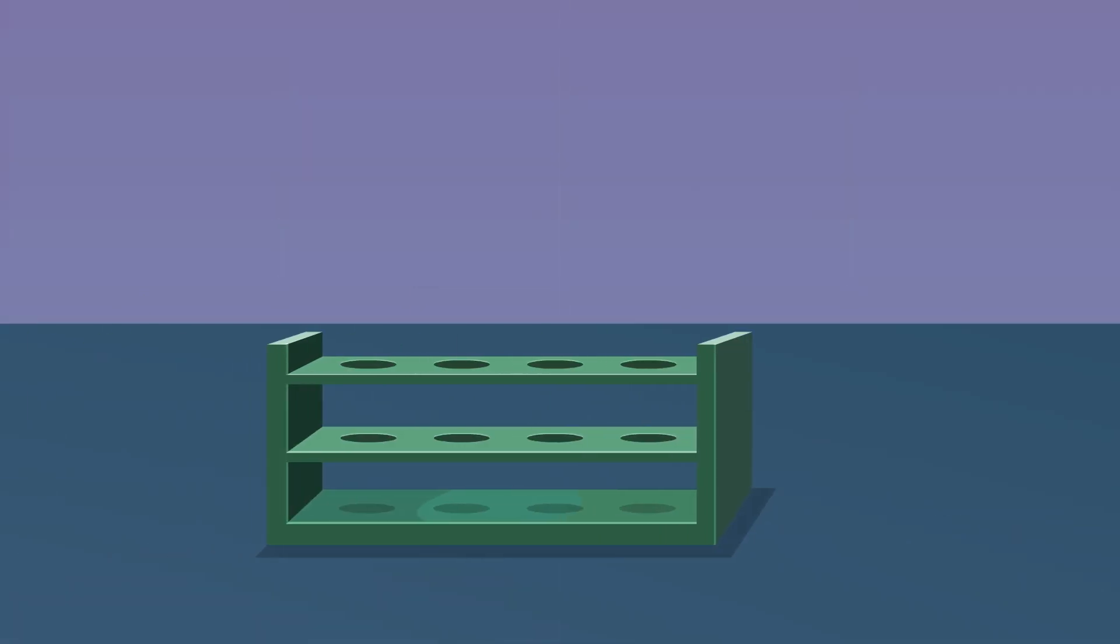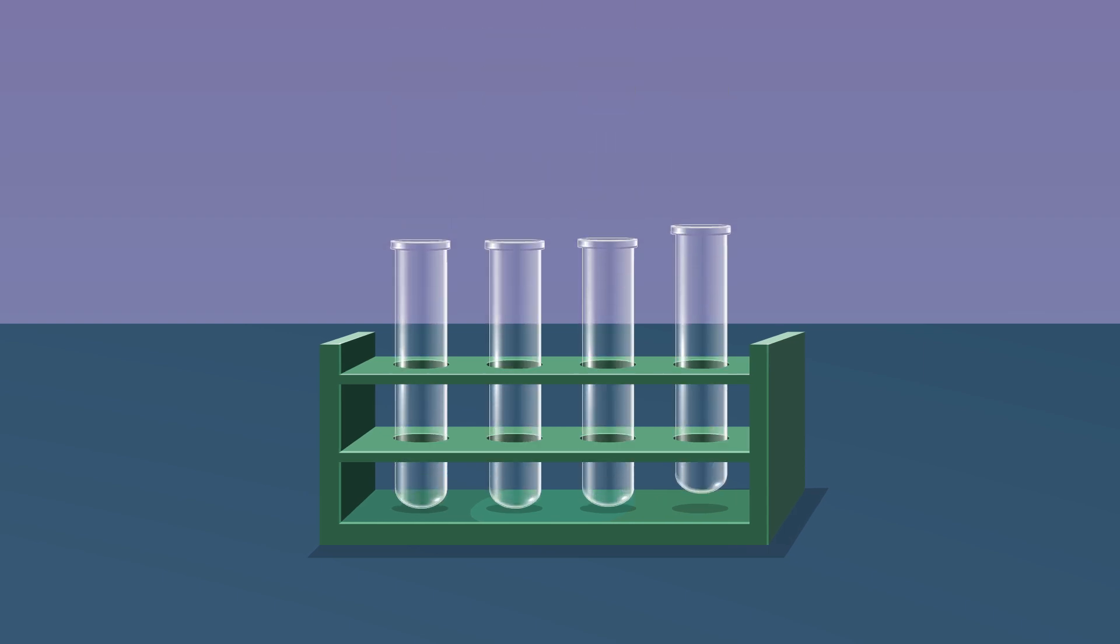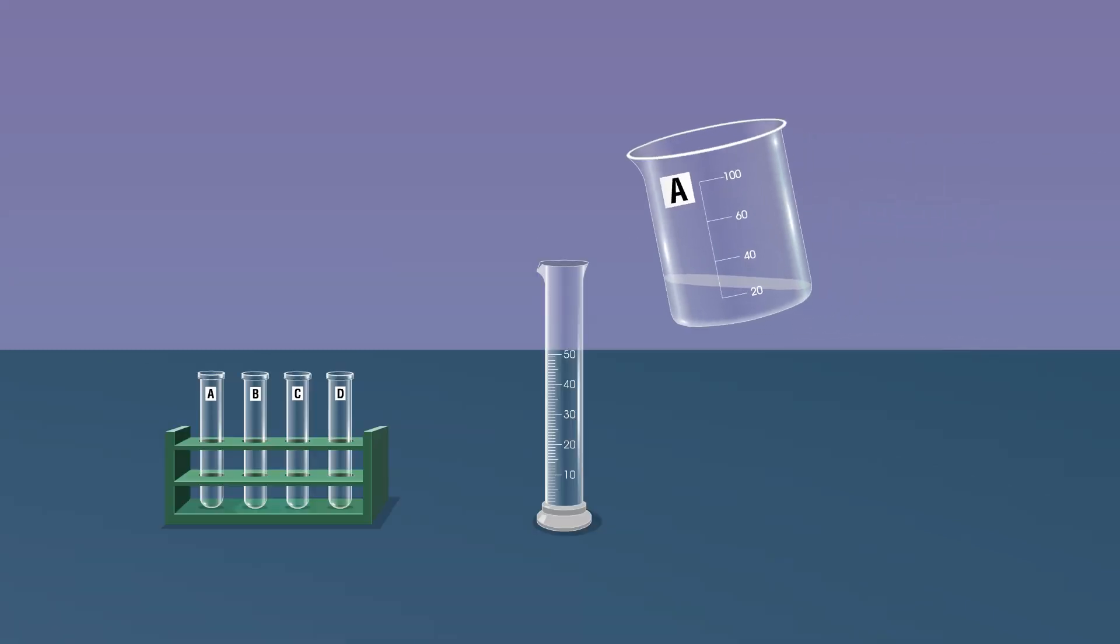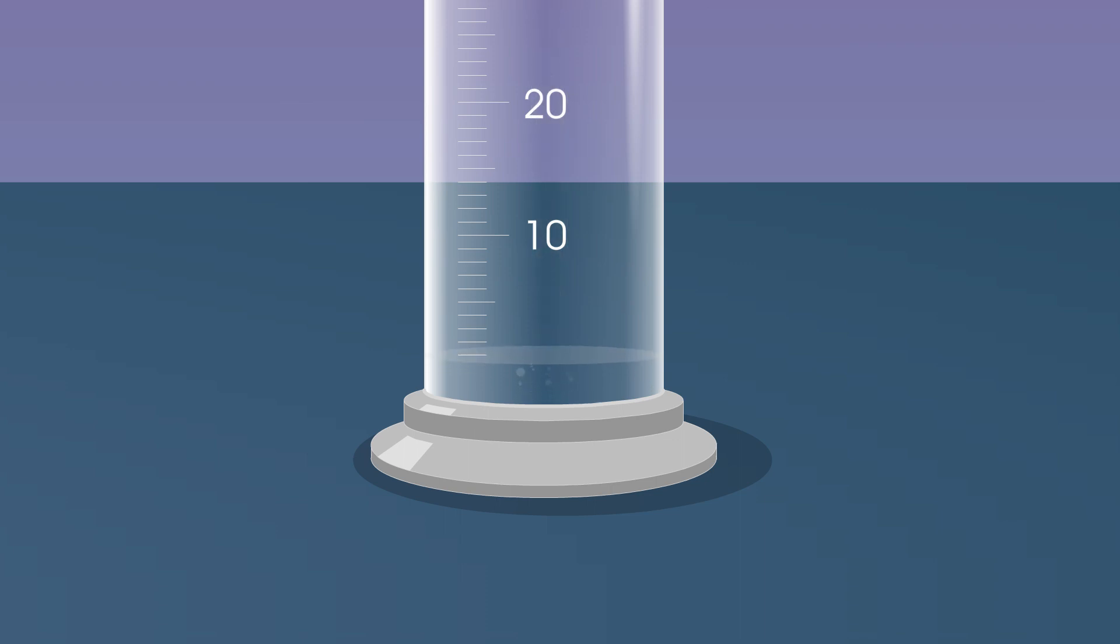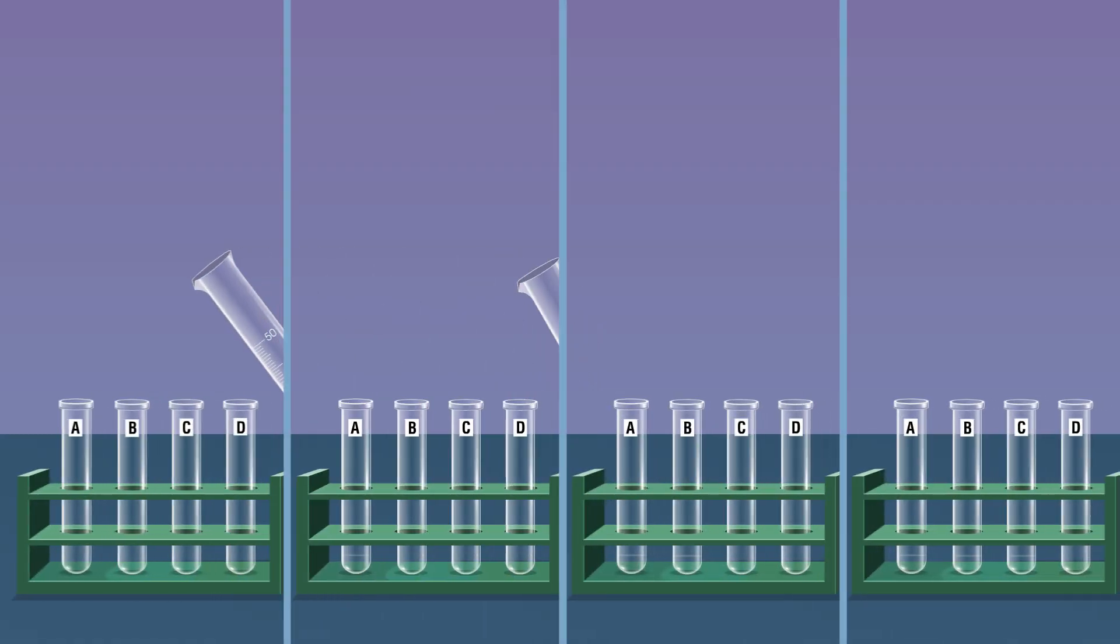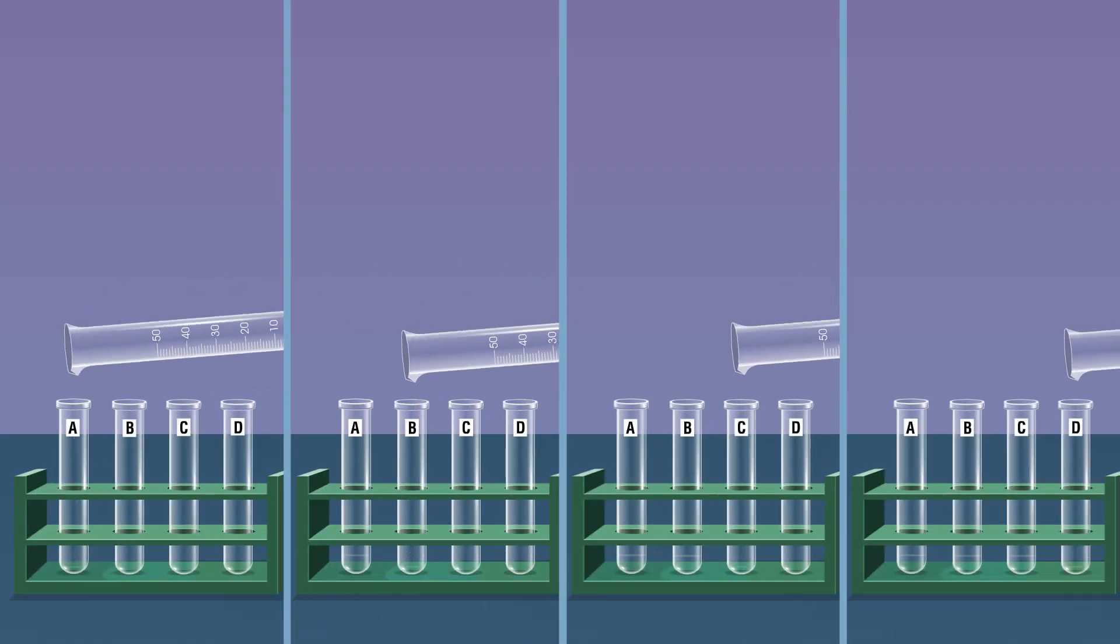Take a test tube stand, place the four test tubes and label them as tubes A, B, C, and D. Pour one ml each of the above prepared soap solutions using a measuring cylinder in the corresponding test tubes.